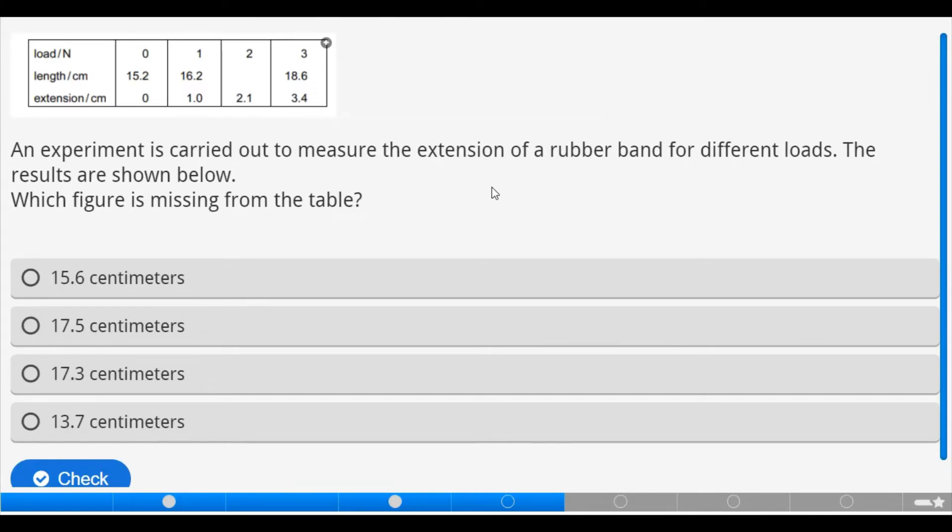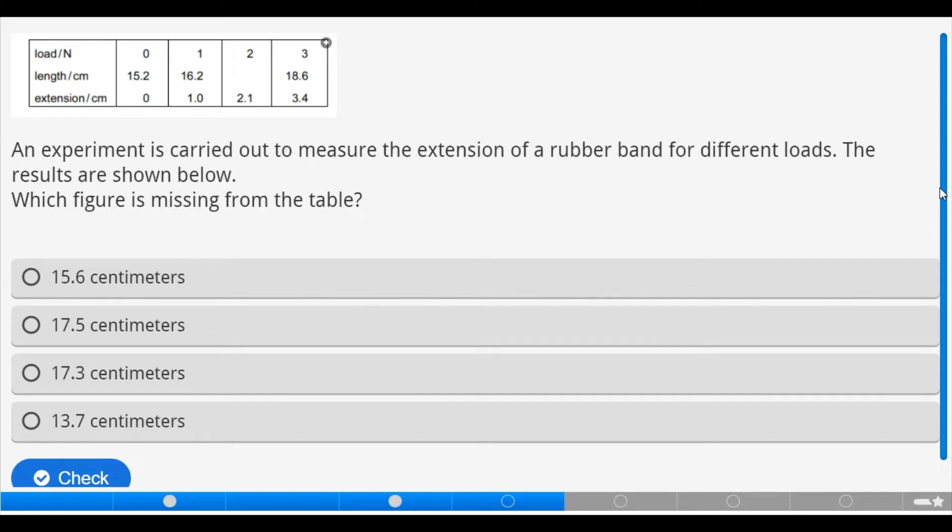Now looking at this question, an experiment is carried out to measure the extension of a rubber band for different loads. The results are shown below. Which figure is missing from the table? If we should look at the table, it shows the relationship between load, length, and then extension. And we should not forget that length in itself has a relationship with extension. Now let's relate length with extension.